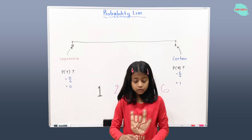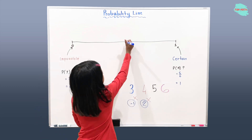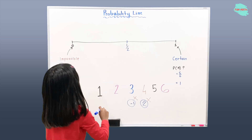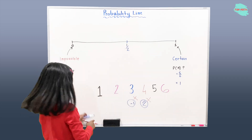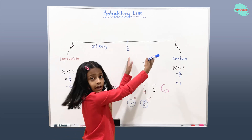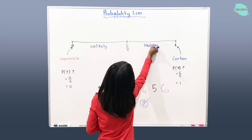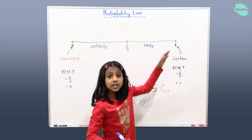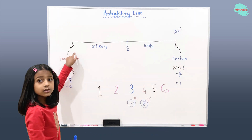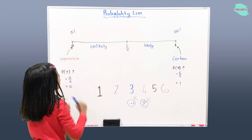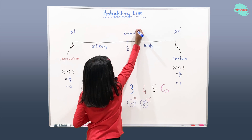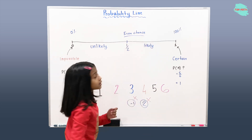That's the most important part of the probability number line — the probability value two is not allowed. In between zero and one, there is the number one half. On this side of one half it is unlikely, and on the other side of one half it is likely. The number one represents 100 percent, zero represents zero percent, and in the middle there is an even chance.